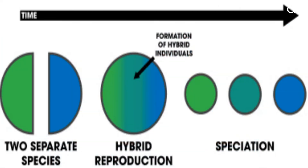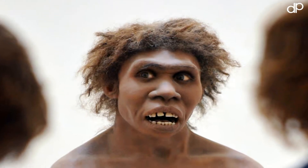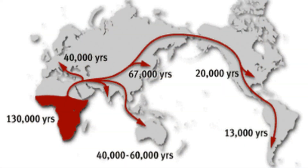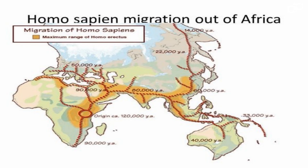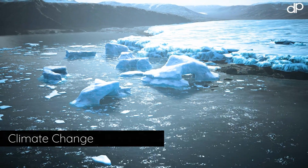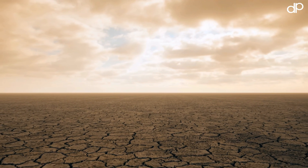Another challenge is the role of hybridization. Some researchers have proposed that early human populations interbred with other hominin species, such as Neanderthals and Denisovans, and that this hybridization had an important impact on the evolution of modern humans. There is also debate about the timing of the out-of-Africa migration, with some researchers proposing it occurred earlier than previously thought, as well as arguments that climate change, rather than biological factors, was the primary driver of the migration.